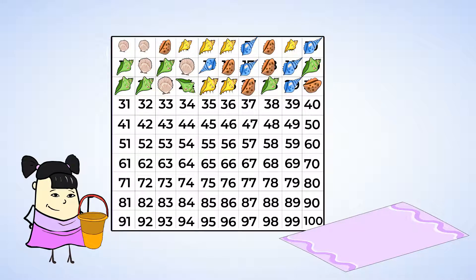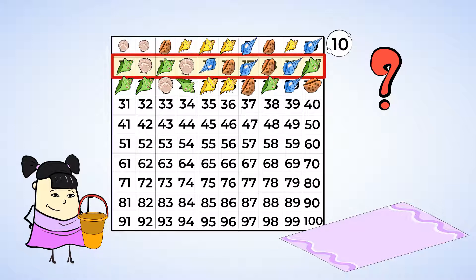Huh. That makes me wonder. How many shells are there in one row? Well, let's see. 1, 2, 3, 4, 5, 6, 7, 8, 9, 10. 10 shells in this row. But how many shells are there in the next row? 1, 2, 3, 4, 5, 6, 7, 8, 9, 10. Huh. There are also 10 shells in this row. Aha. So by putting the shells in the hundreds chart, we made groups of 10.